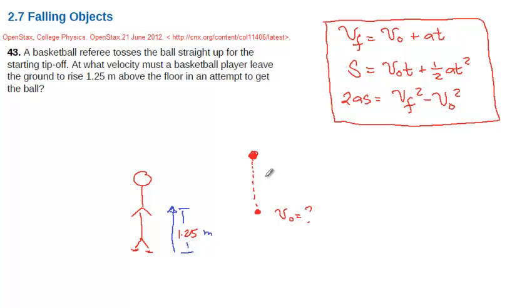So V0 here is what you're looking for. And the displacement here, S, is what is given to be 1.25. And V final here is very important that you know that V final here, if it's maximum height that the player can reach, V final here must be zero. Because after that, the player will now be moving downwards.